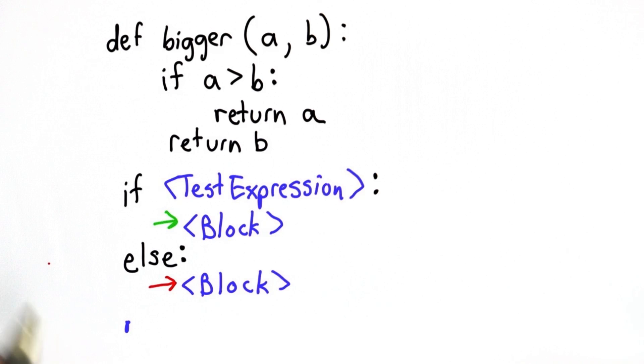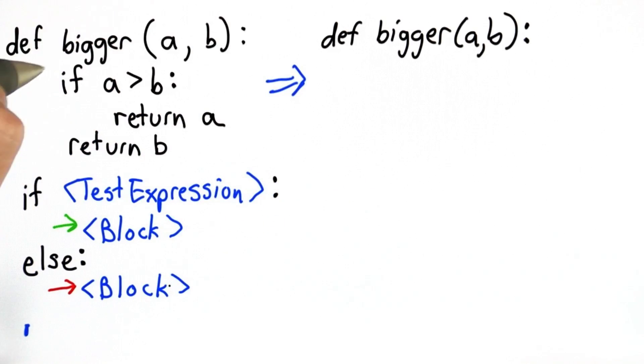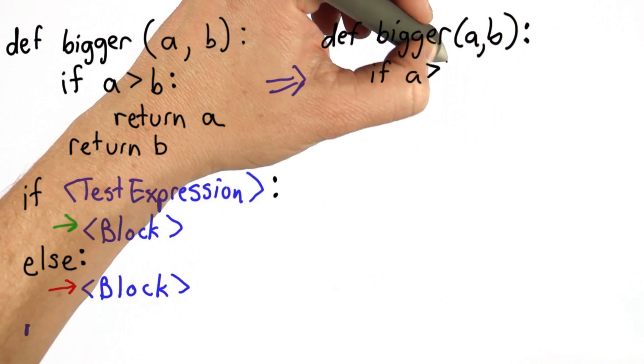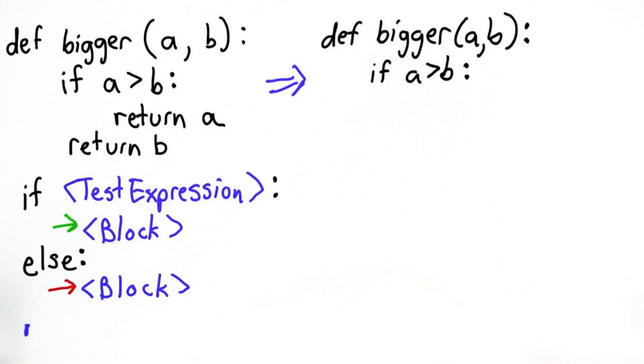So let's see how to rewrite bigger using else. We'll use A and B as the names of our parameters as before, and we'll start the same. We're going to have our if and our test is still A is greater than B. And if that's the case, then we return A.